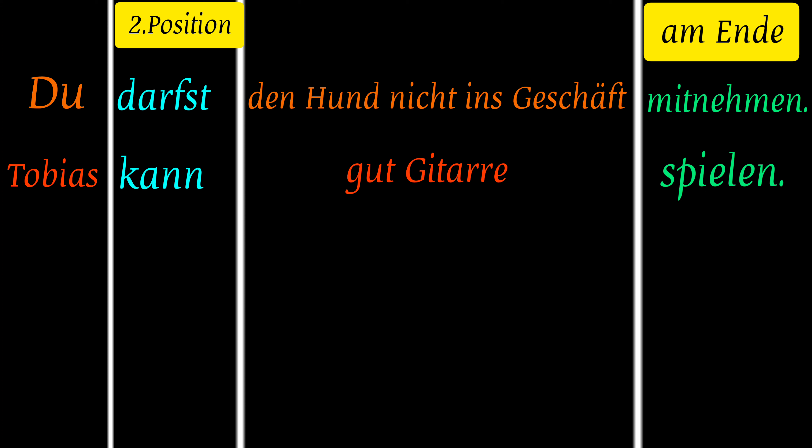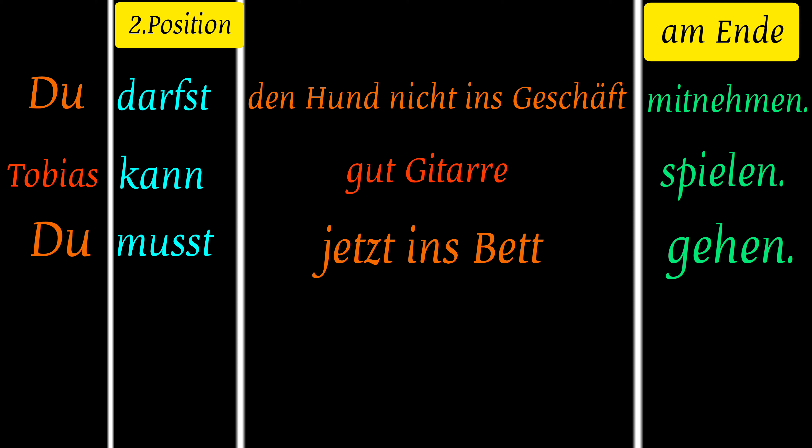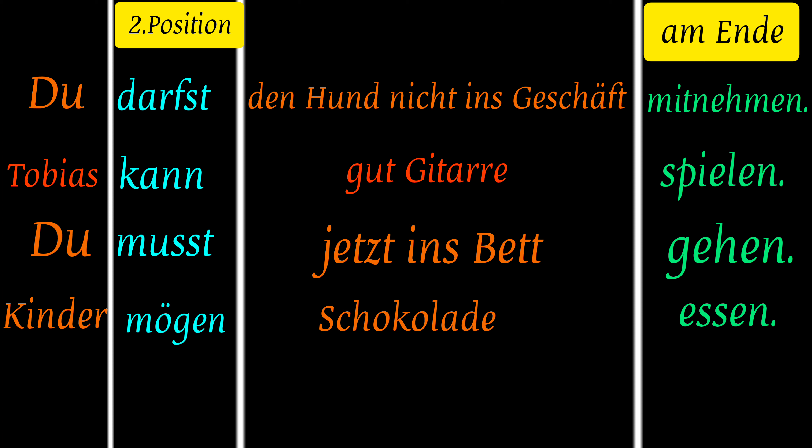More examples: 'Tobias kann gut Gitarre spielen' — können is conjugated as 'kann' in second position, and the main verb spielen is in infinitive at the end. 'Du musst jetzt ins Bett gehen' — musst is in second position, and gehen is the infinitive main verb at the end of the sentence.